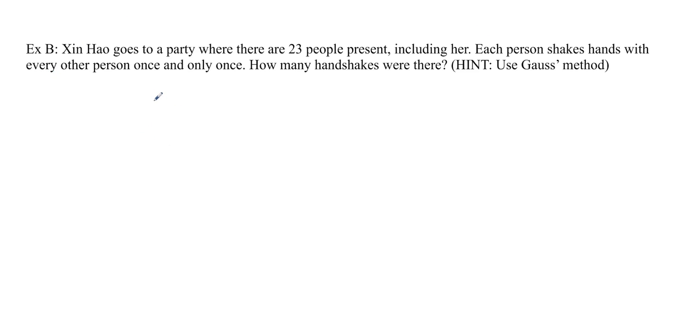But I'm going to go ahead and do it. Xinhao has to shake hands with 22 people, because she's not going to shake hands with herself. So she shakes hands with 22 people. The next person in, let's say it's Alyssa, she's already shaking hands with Xinhao, but she has to shake hands with 21 other people. And the next person, let's say it's Isis, she has to shake hands with 20 more people. She's already shaking hands with Xinhao and Alyssa. And so forth, all the way down to the last person who shakes hands with one person.